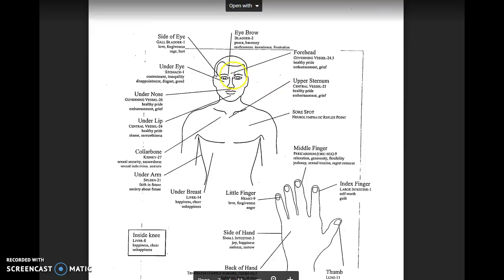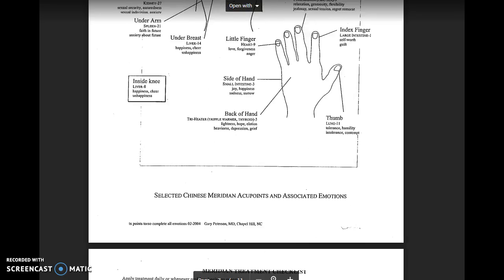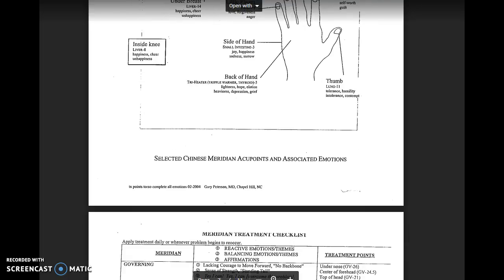And this one I really like because for each of the acupuncture points it talks about not only the organ, like the eyebrows, the bladder, but the emotional component, good and bad for each one.